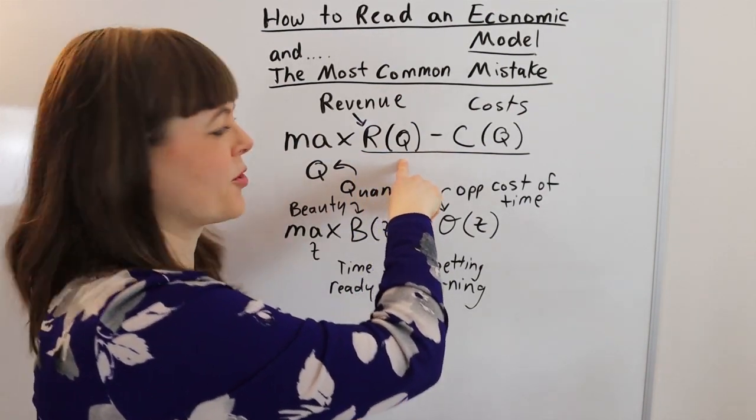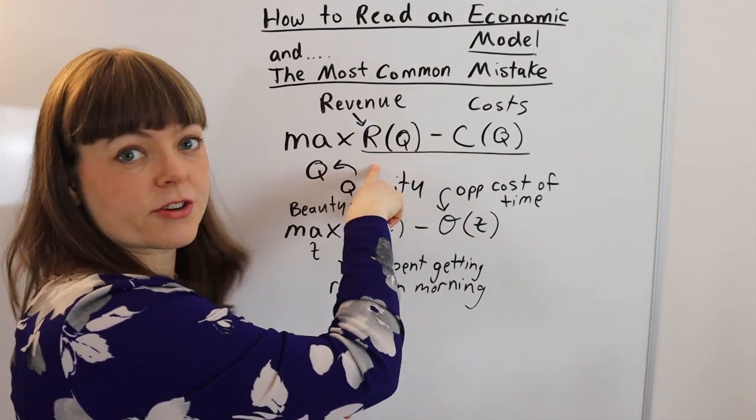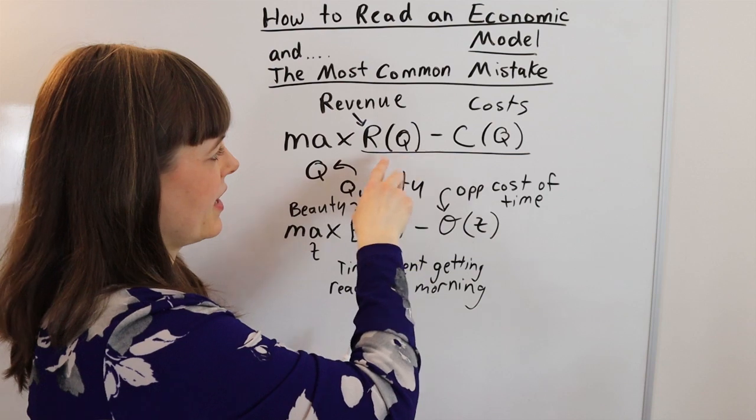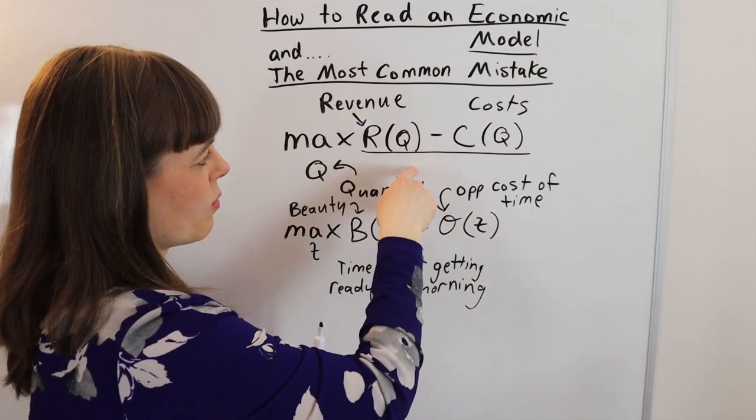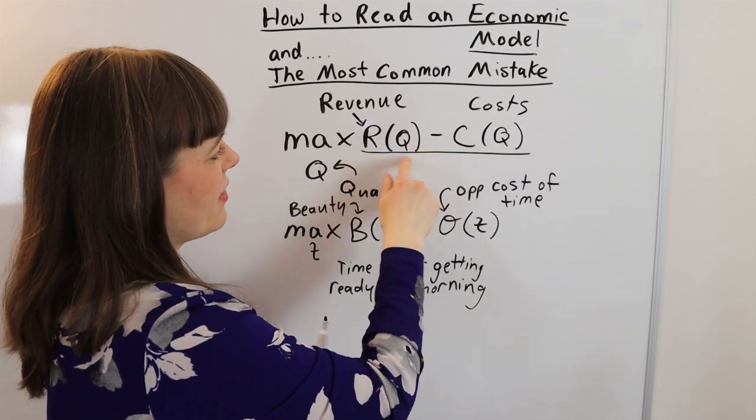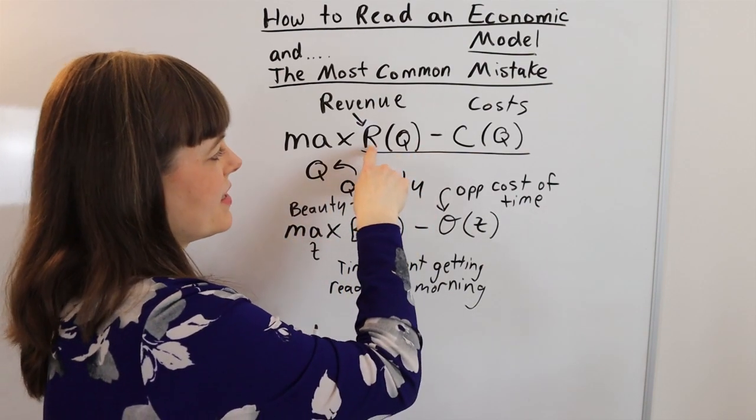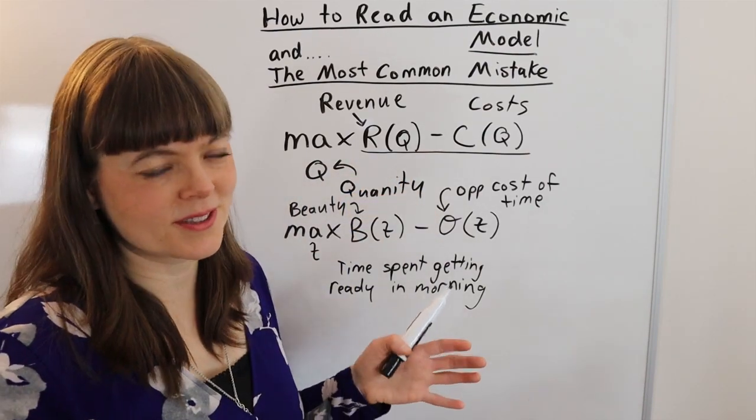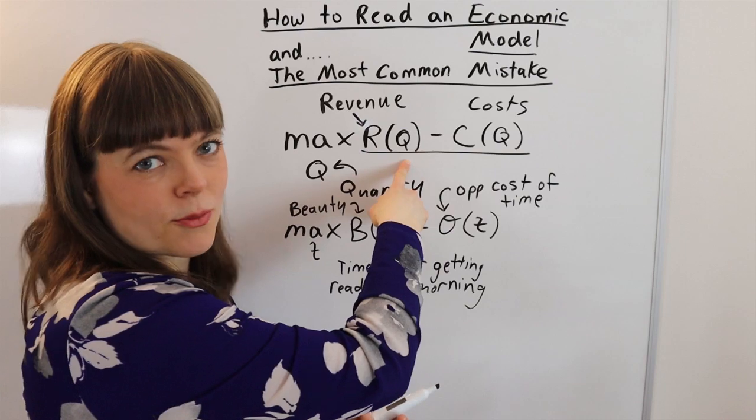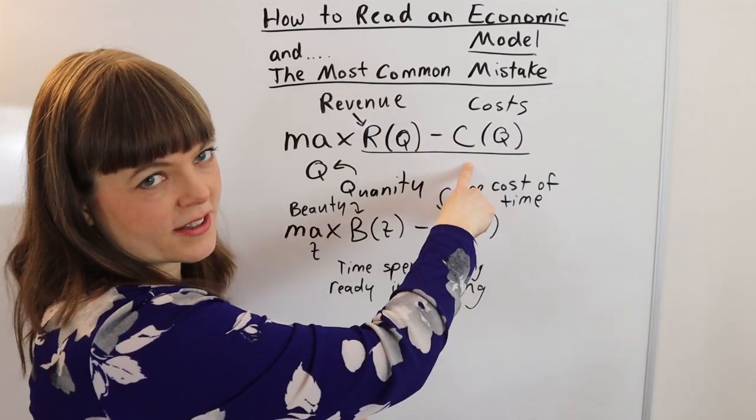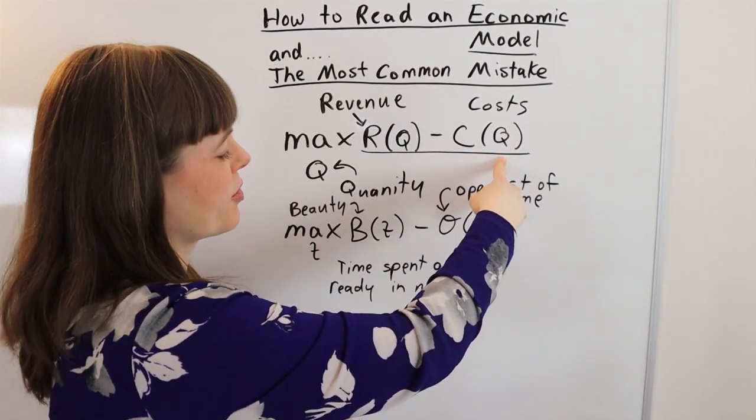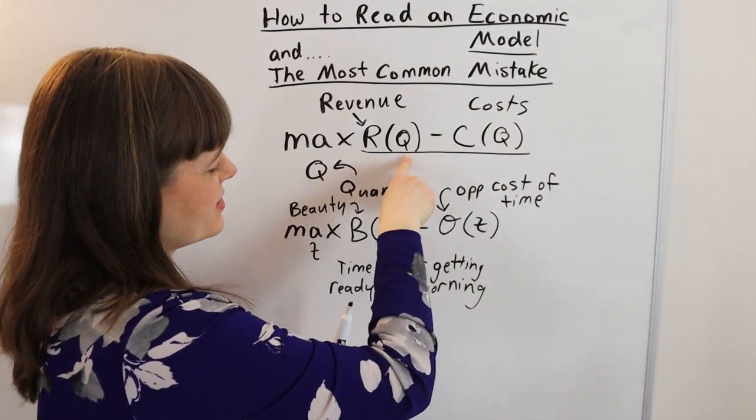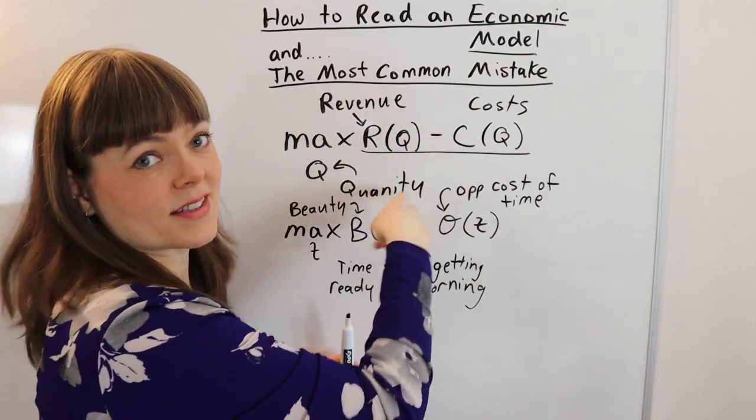And each of these depends on the choice variable. So that means if you change the quantity you produce, you're going to change the amount of revenue you get, but you're also going to change the costs to the firm. And so you want to sort of orient by identifying what's the benefit, what's the cost, and then sort of think in your head about why does this depend on this? Like, why would your revenue depend on the quantity you produce? And of course, you're like, oh, yeah, that's because if I produce more, I'll sell more. Why would the costs depend on the quantity I produce? Well, of course, producing stuff costs money. So you're sort of orienting by figuring out why is this relationship true?